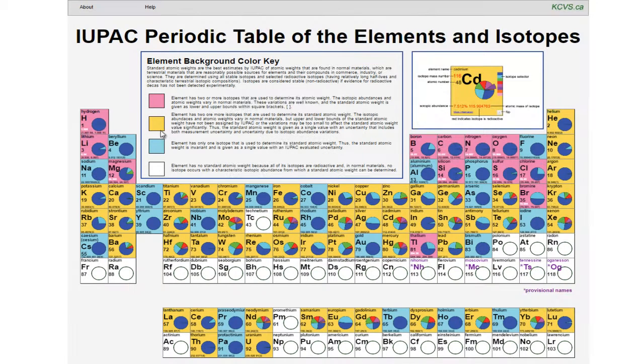Yellow is the background color for an element if two or more isotopes are used to determine its atomic weight, but the upper and lower bounds of the standard atomic weight have not been assigned by IUPAC.